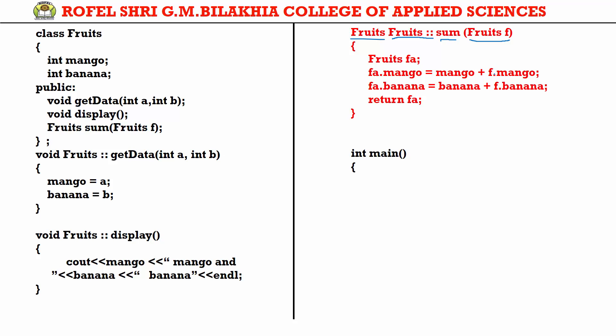Now in the main function: we create two objects, F1 and F2, whose values we want to add. We call F1.getData with two parameters — 5 and 3. So 5 goes to parameter A and 3 goes to parameter B, meaning mango equals 5 and banana equals 3 for object F1.